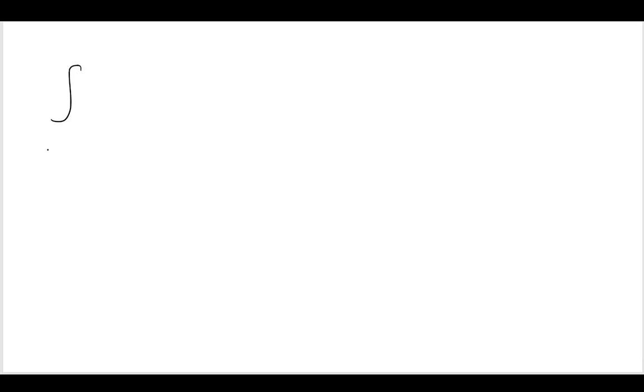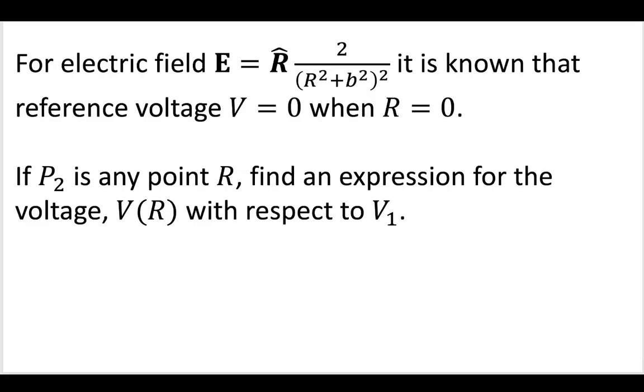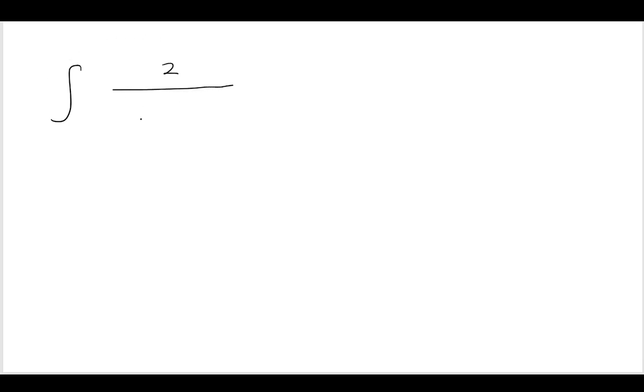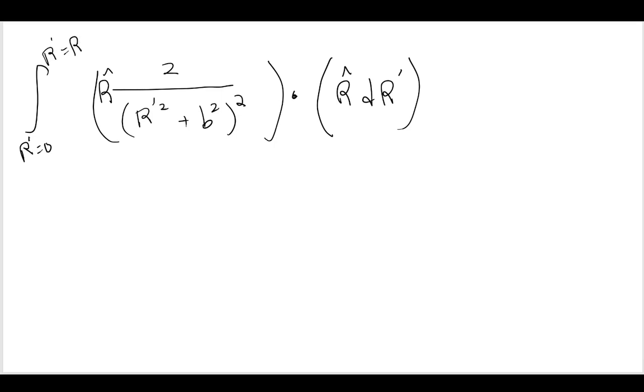So we're going to integrate from 0 to R, and I'm going to use a slight change in variables to make all of our math friends happy. I'm going to call this R-prime squared, this is b squared, dot with R-hat dr-prime, and we're going to be integrating from R-prime equals 0 to R-prime equals R.